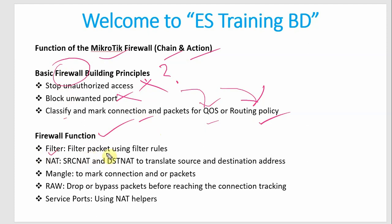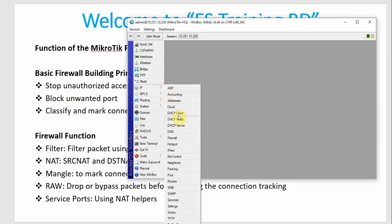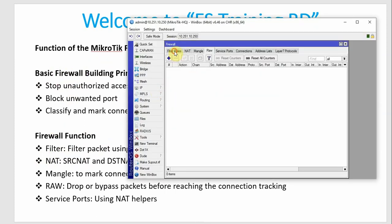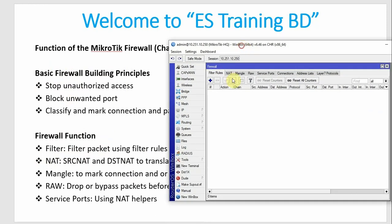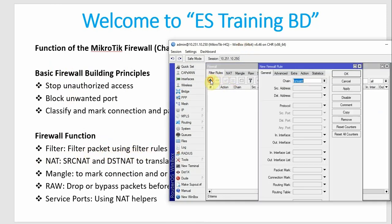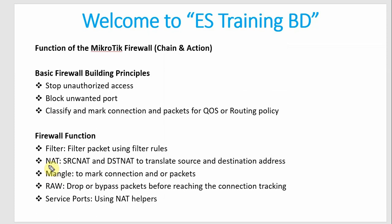First, Filter — filter packets using Filter Rules. In MikroTik, we go to the Firewall and look at the Filter tab. This filter tab is used to filter packets using Filter Rules.